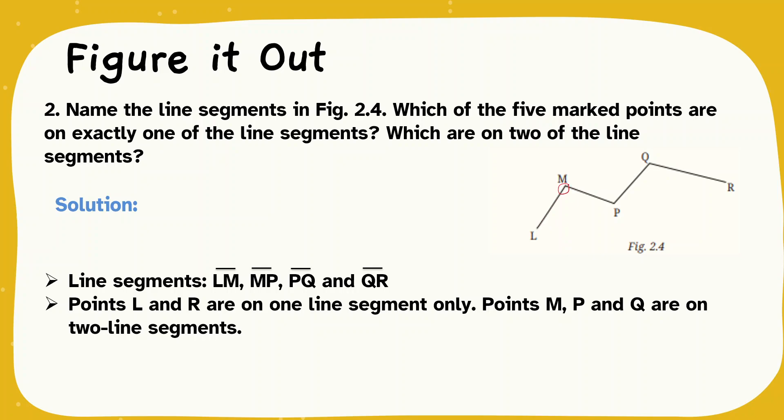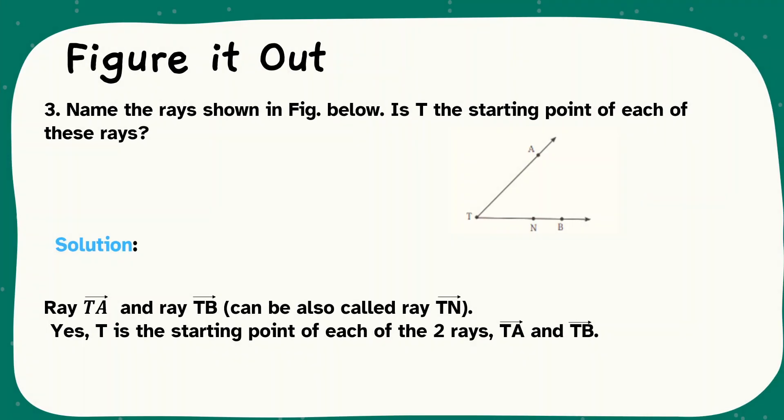But M, P, Q are on two line segments. See, if you assume here, M has two line segments. M has a line segment ML as well as line segment MP. Similarly, P has line segment PM and line segment PQ. Q has line segment QP and line segment QR. These three have two line segments. But L has only one line segment LM. Similarly, R has only one line segment RQ.